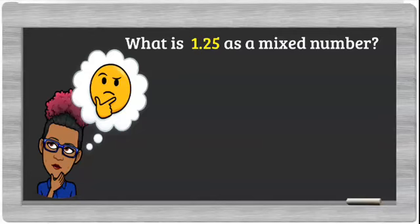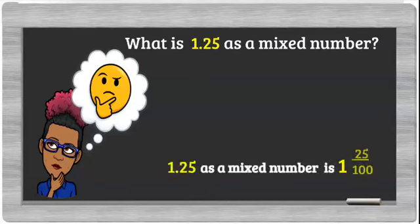Another example: what is 1.25 as a mixed number? So again, 1 is our whole and 0.25 represents 25 parts of the whole divided into 100 equal parts. So as a fraction, 25 hundredths, and our mixed number is 1 and 25 hundredths.